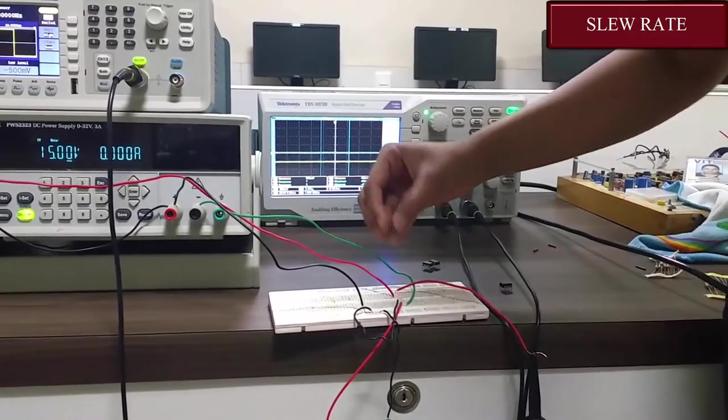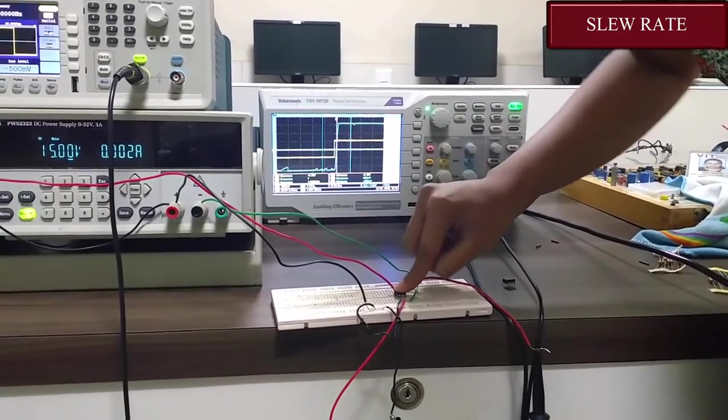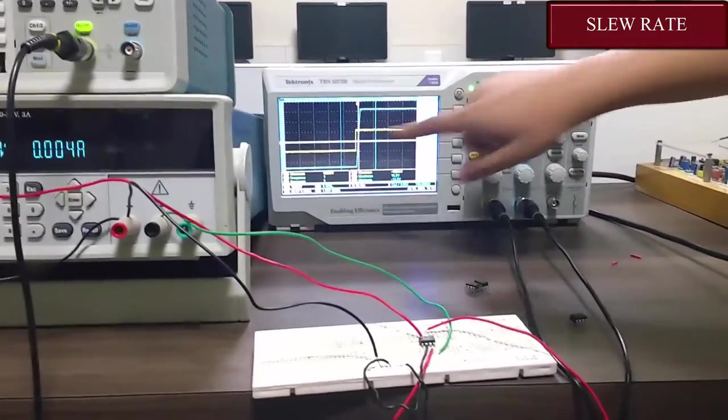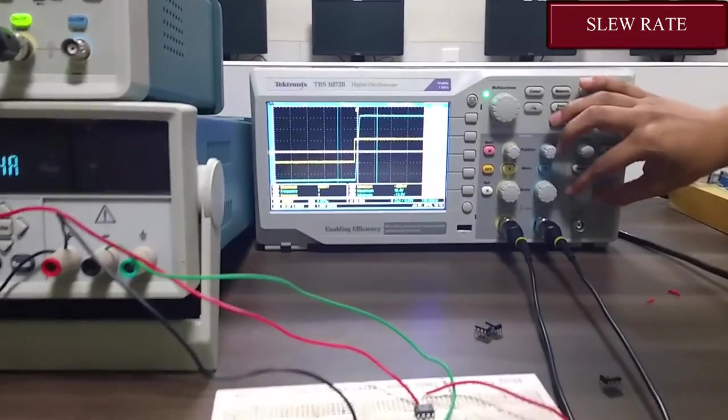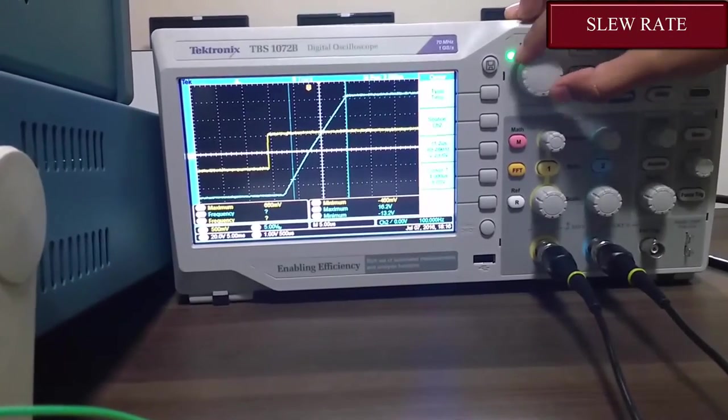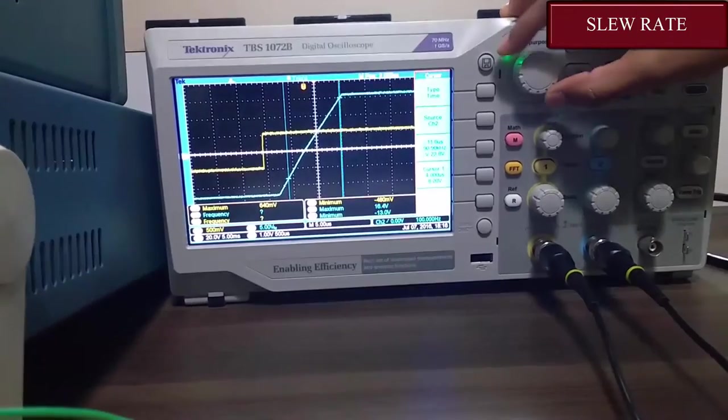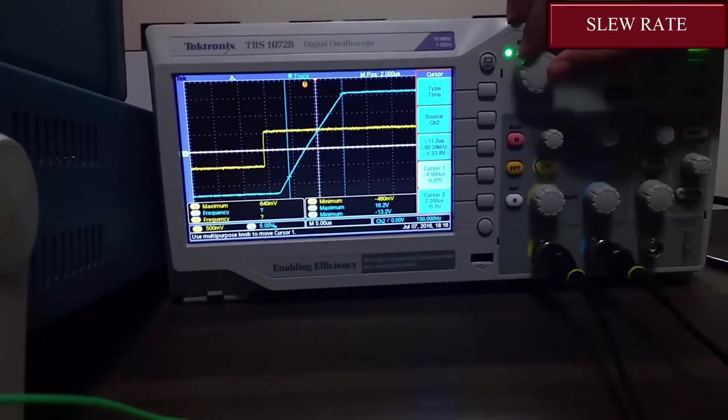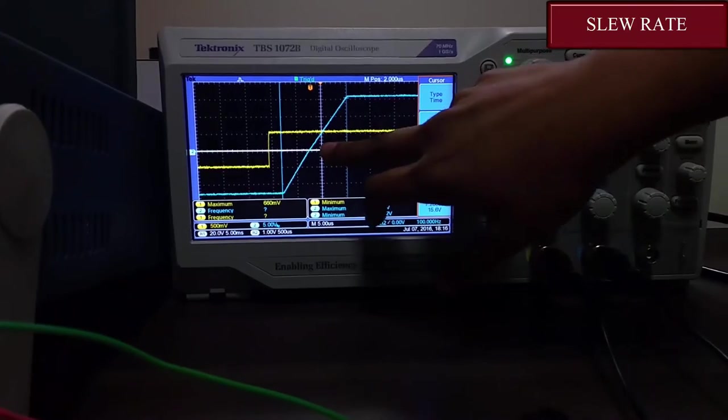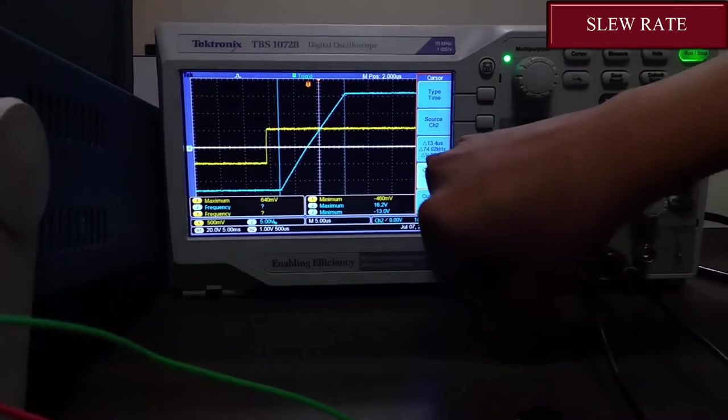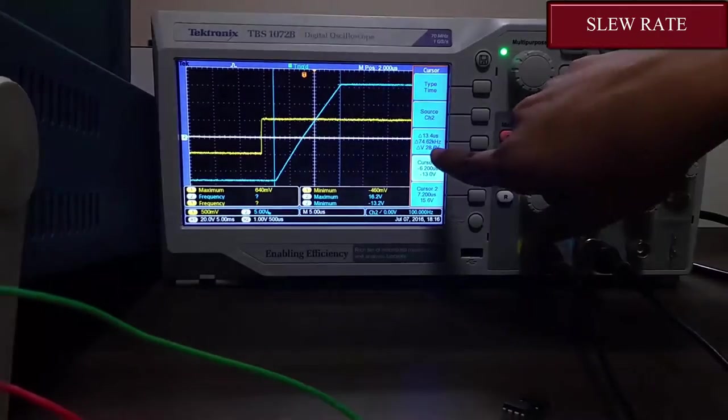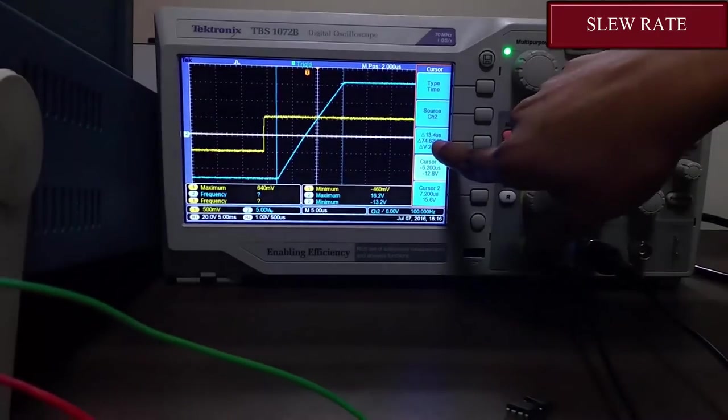Now I am changing it with OP27. As you can see it has changed. Now let's increase it. Now let's see what the slew rate is. I am setting cursor 1 here. Now we have seen that the change in voltage is 28.4 volts and that in time is 13.4 microseconds, which gives us 2.119 volts per microsecond.